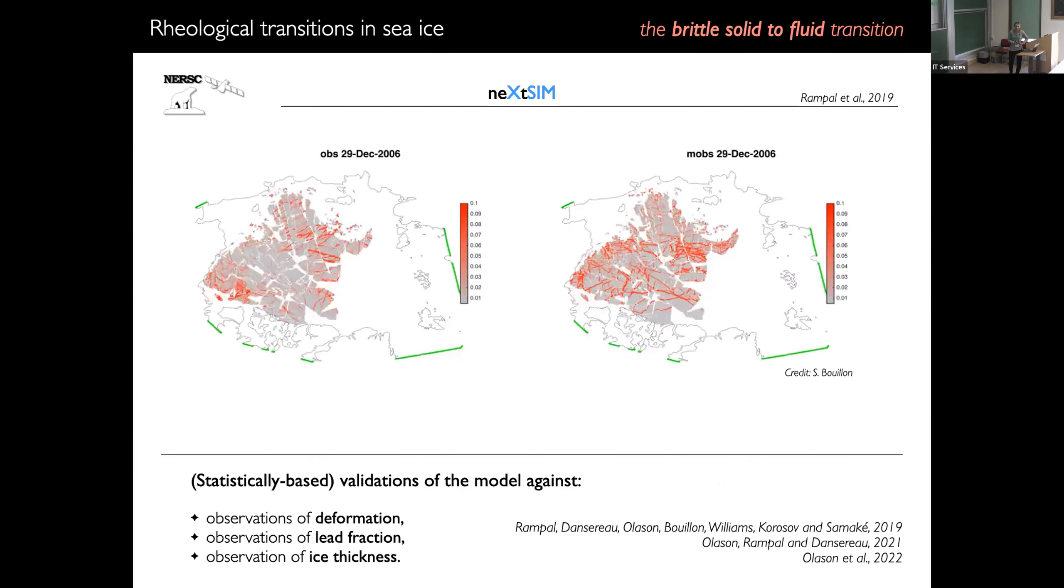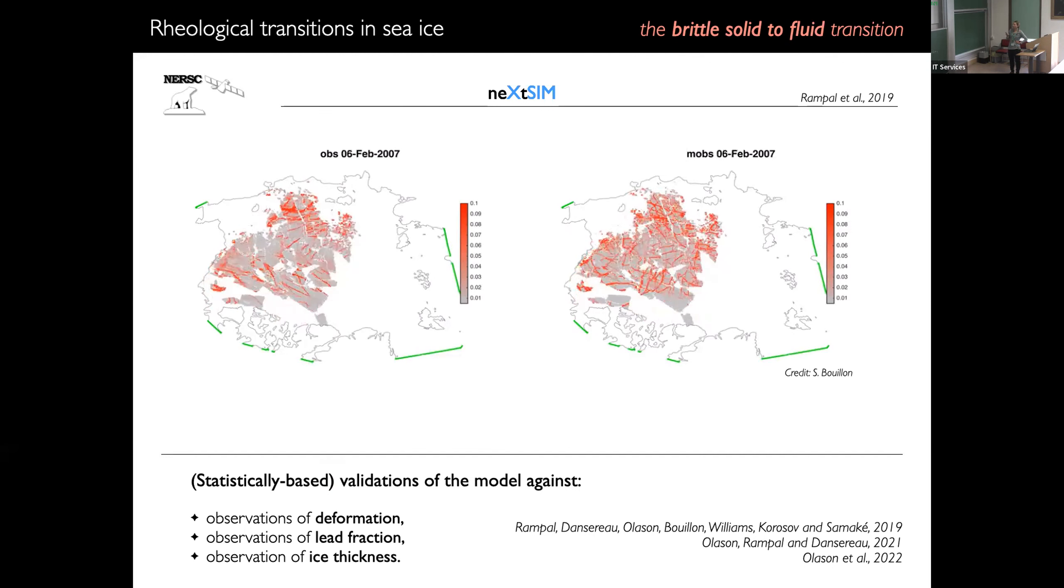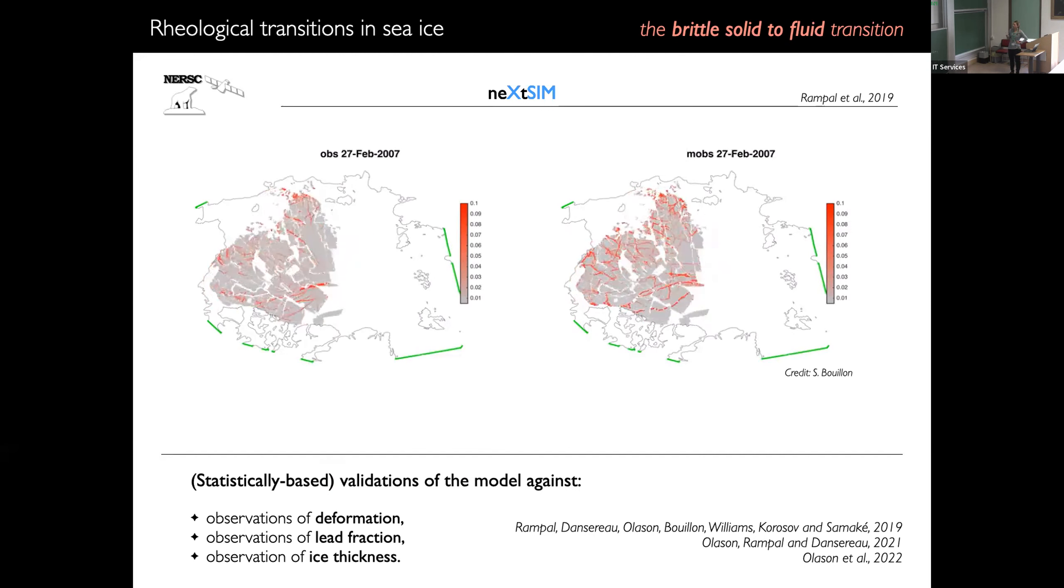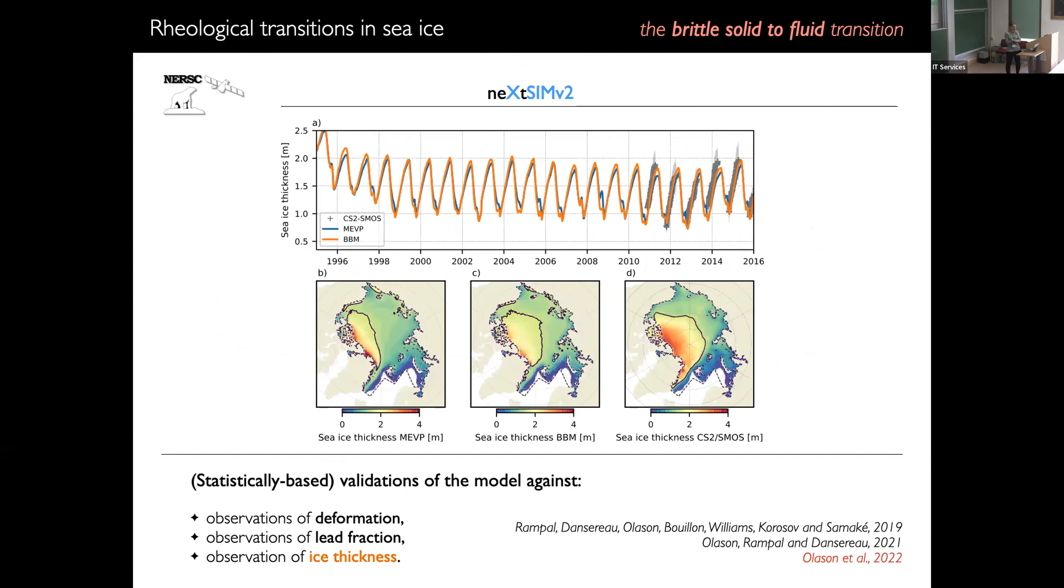So we implemented these rheologies in a model that's called Nixon, that covers the whole Arctic. That's a Lagrangian model, and we perform statistical validation against deformation, lead fraction, and I won't talk about that today. I just want to point out that the newest version of the model, that's the Bingham-Brittle model, have allowed us to run the model for much longer time periods, so over a few years, and get much better agreement with observations of thickness.